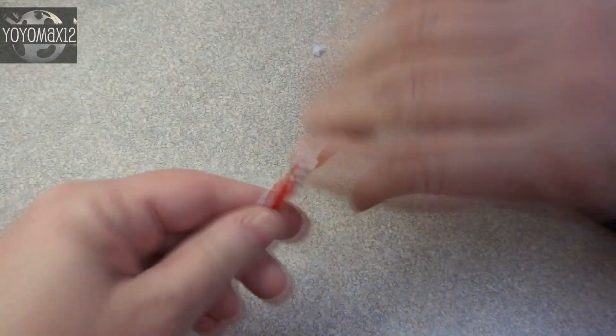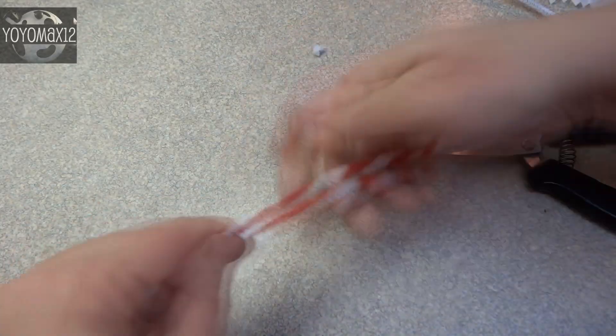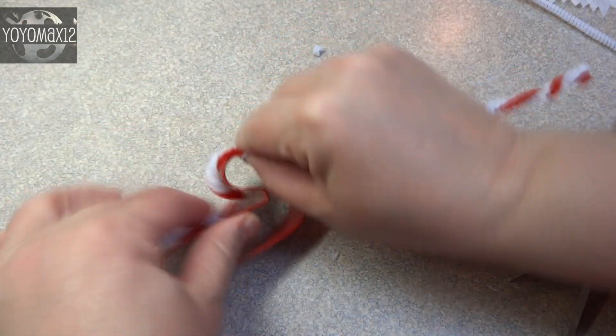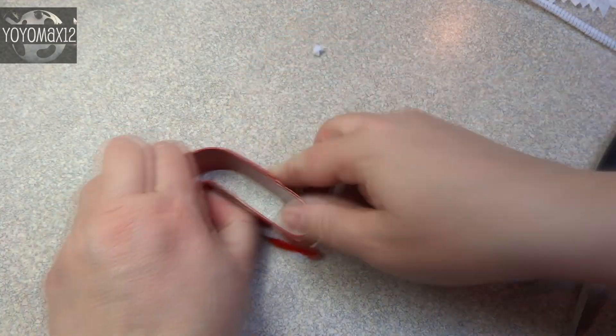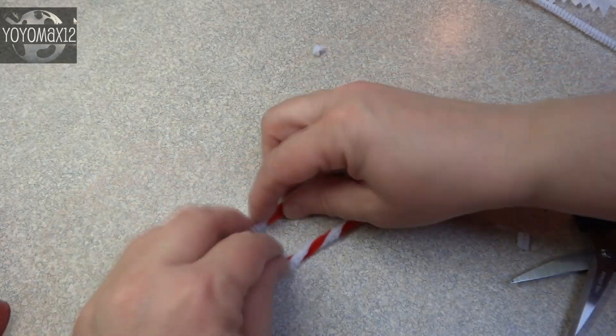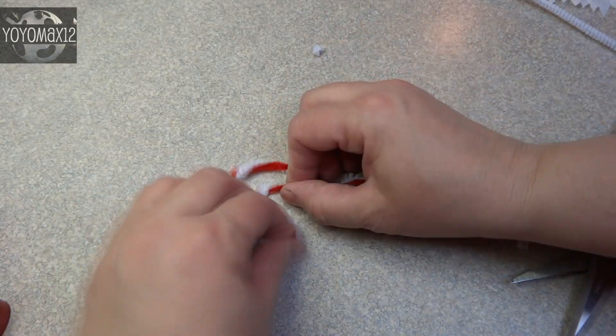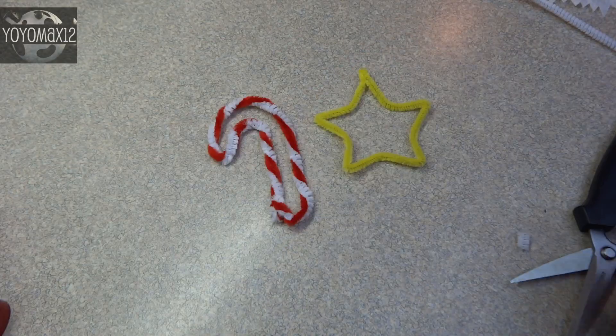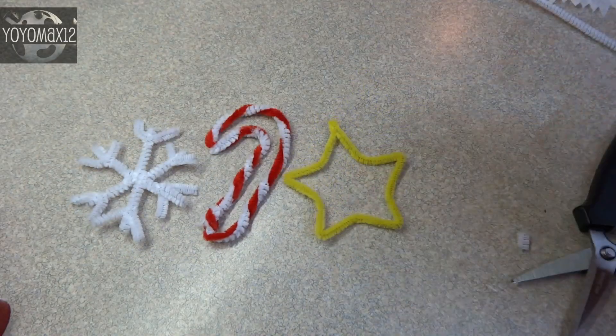And for a candy cane, twist a red and a white one together. And at first, I wrapped it around this candy cane cookie cutter just to do the same thing as I did for the star. But when I was done, I found that it was a bit too wide and a bit too thick. So I just kind of played with it and made a narrow shaped candy cane. So there are the three shapes that I made.